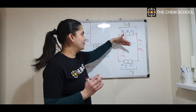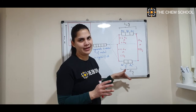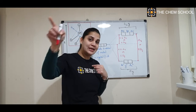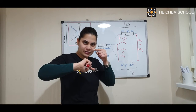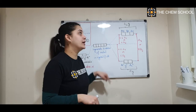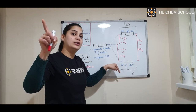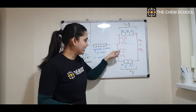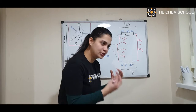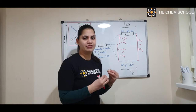Always remember: in a tetrahedral complex, t2g carries the 60% energy barrier and eg carries the 40% energy barrier — this is the reversal of the octahedral structure. In octahedral complexes, t2g was lower in energy; in tetrahedral, t2g is higher. Similarly, eg is lower in tetrahedral, whereas in octahedral eg was higher. So the two are vice versa in terms of energy.